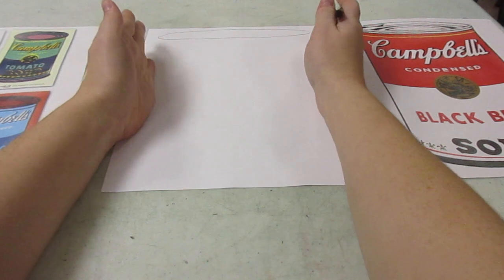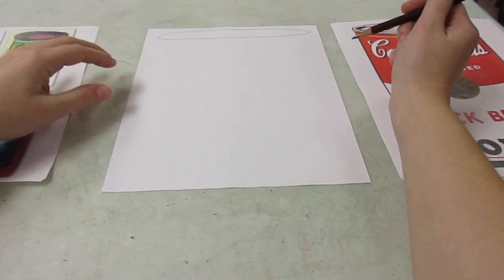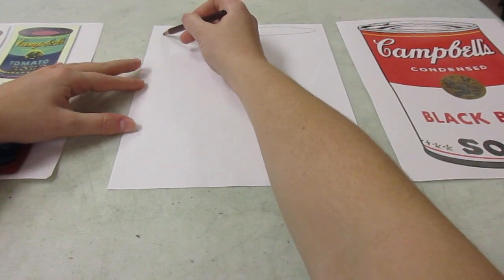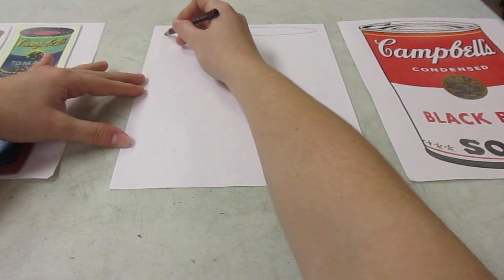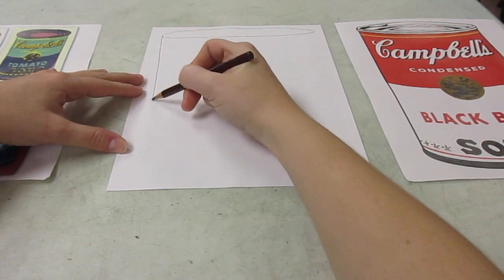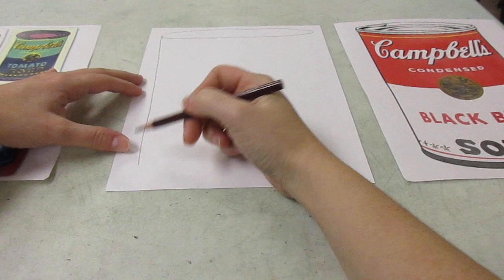Now, from the sides of the oval, you're gonna go straight down. So you have to go all the way to the side and then pull your pencil straight down on both sides.